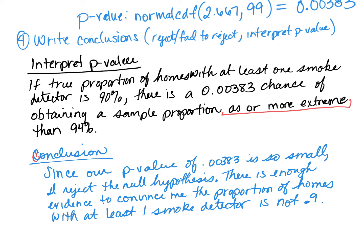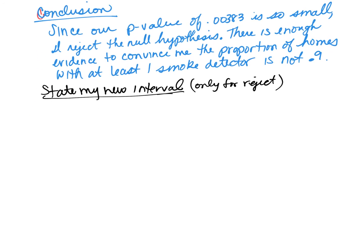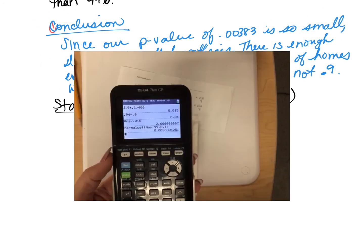Because we rejected, we state our interval. If we don't think it's 0.9, what do we think it is? We believe our sample is our best estimate, but with caution — we create a confidence interval. Get those calculators out. We can create that interval using the calculator.